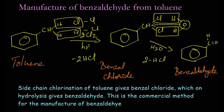The side chain chlorination of toluene gives benzal chloride, which on further hydrolysis gives benzaldehyde. This is the commercial method of manufacture of benzaldehyde and one of the important reactions. Thank you.